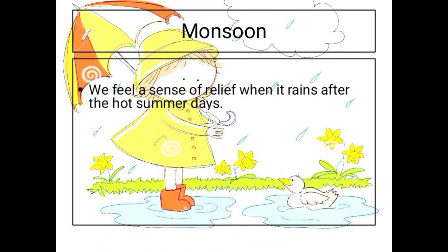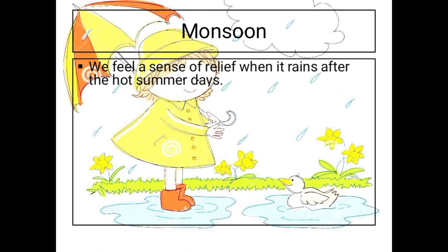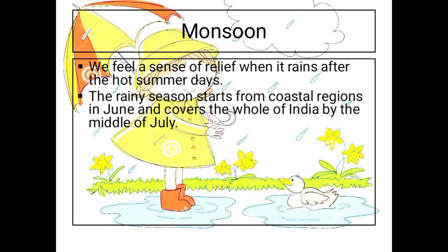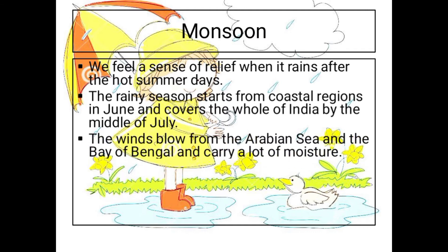Now let's talk about the monsoon season. We feel a sense of relief when it rains after the hot summer days. The rainy season starts from the coastal regions in June and covers the whole of India by the middle of July. The winds blow from the Arabian Sea and the Bay of Bengal and carry a lot of moisture.